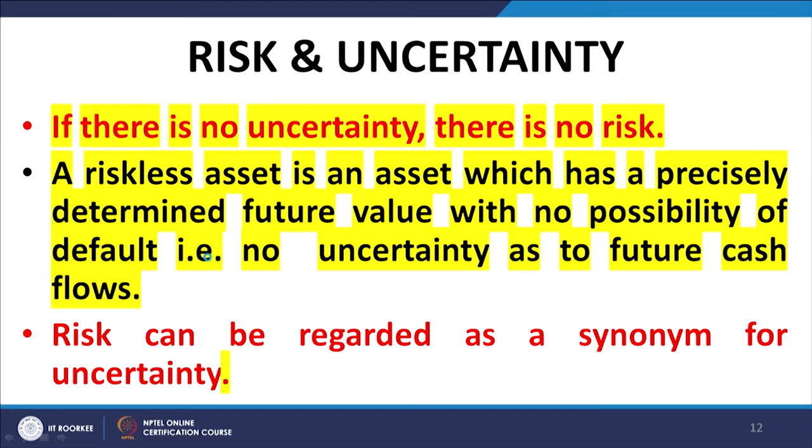Then we moved on to risk and arbitrage. We defined risk in terms of uncertainty and agreed that if there is an instrument which guarantees the repayment of a certain amount — which guarantees a certain value at a future date — then obviously there is no risk attached to that investment if the guarantee is infallible. Therefore, if there is absolute certainty as to the final value of our investment, then there is no risk. Risk arises from uncertainty in the future value of an investment.